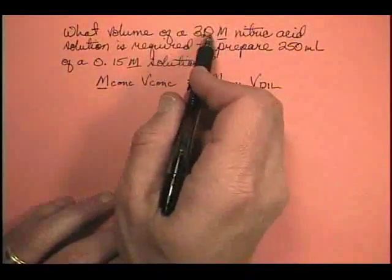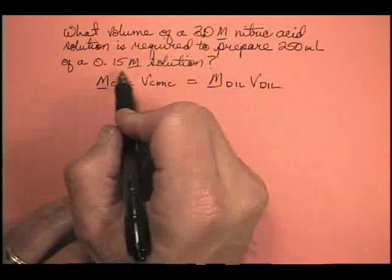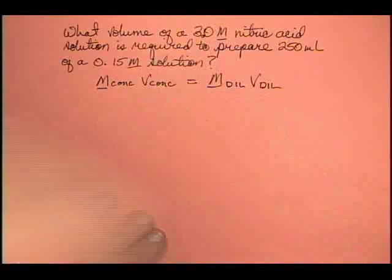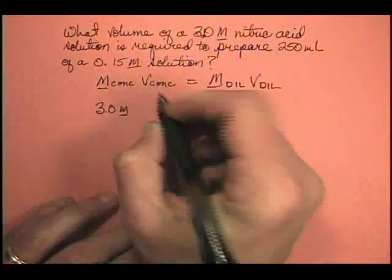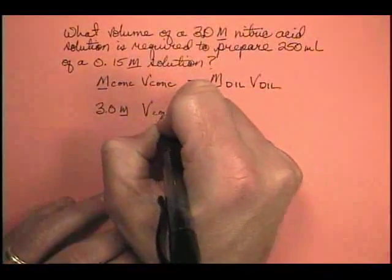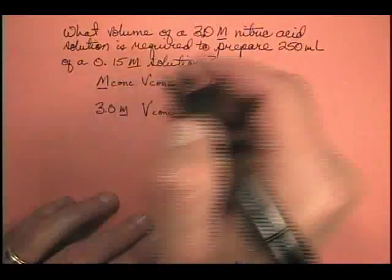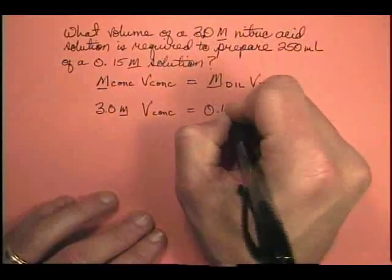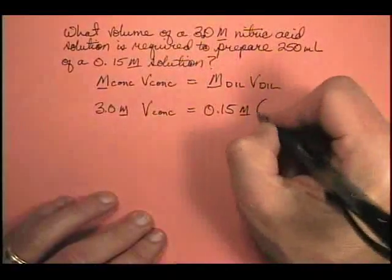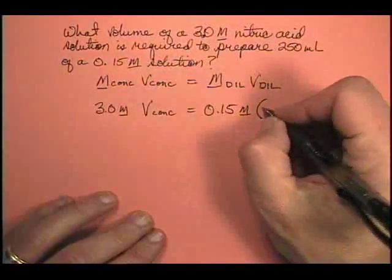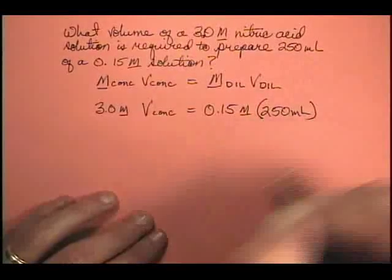Well 3 molar is more concentrated than 0.15 so we can say 3.0 molar times the volume of the concentrated, because we don't know how much, that's what we're trying to figure out, is equal to the molarity of the dilute which is 0.15 molar times the volume of the dilute which is 250 milliliters.